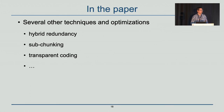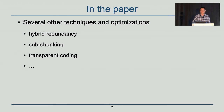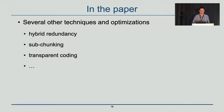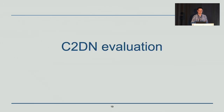So we have mostly talked about two techniques. In the paper there are several other techniques and optimizations, such as hybrid redundancy, sub-chunking, and transparent coding, which I'm not going to cover in today's talk.